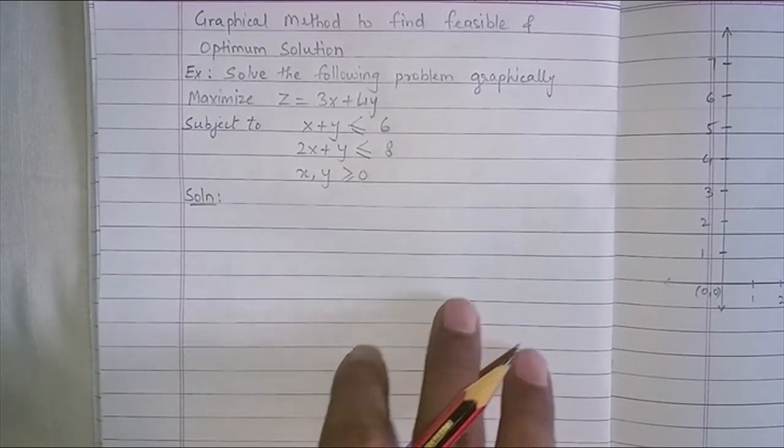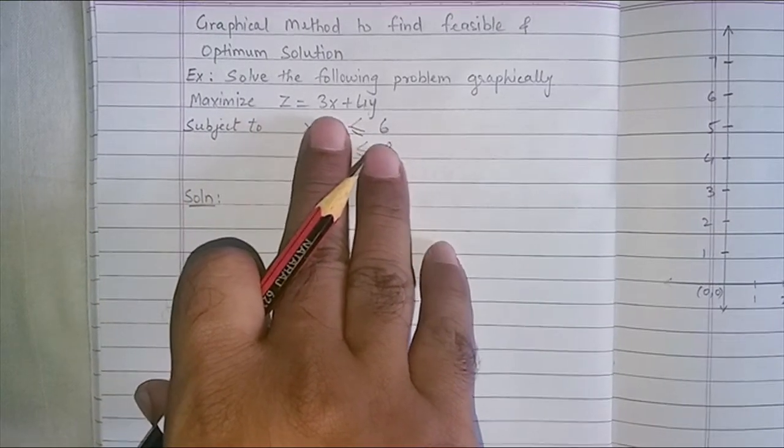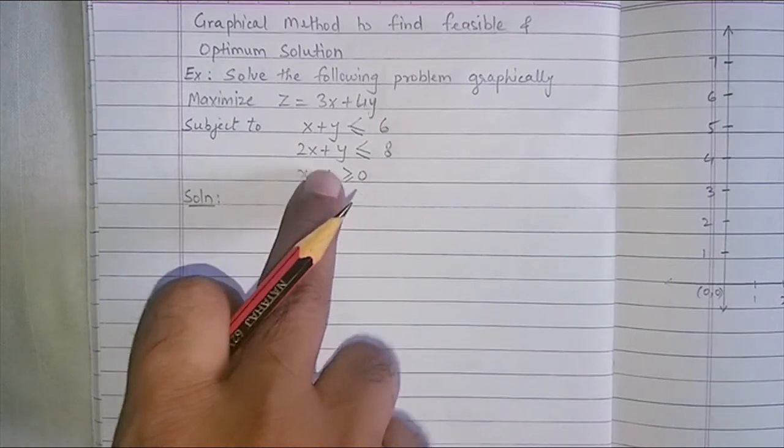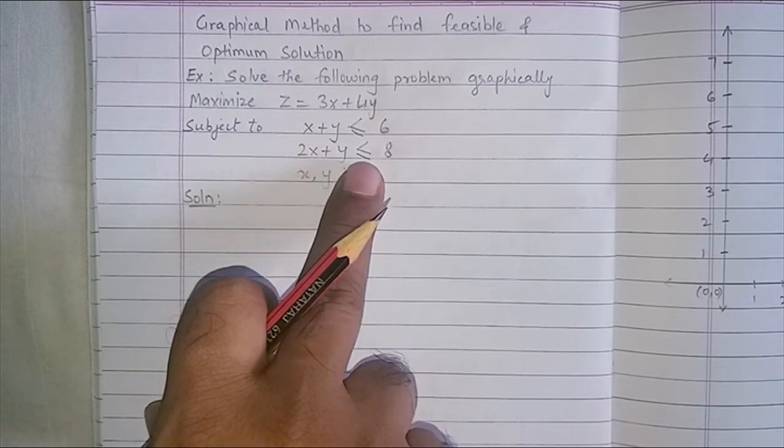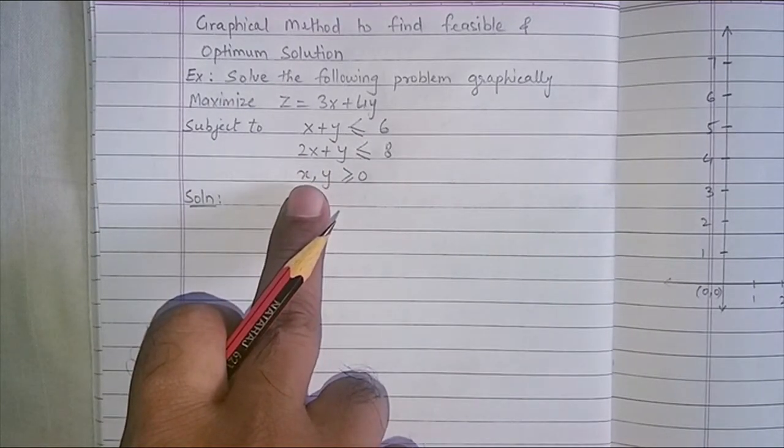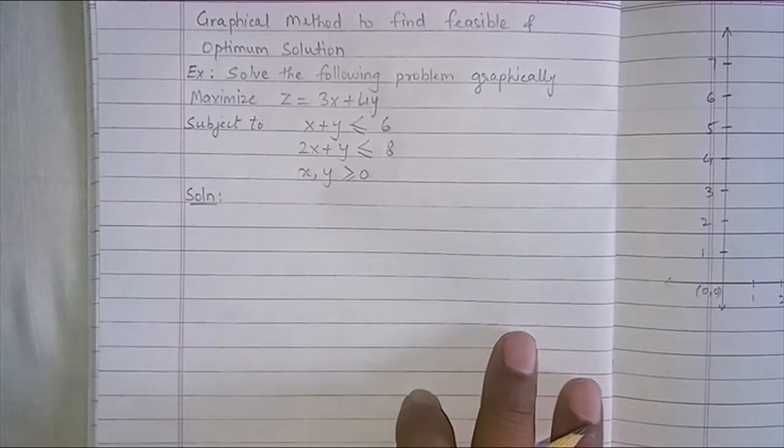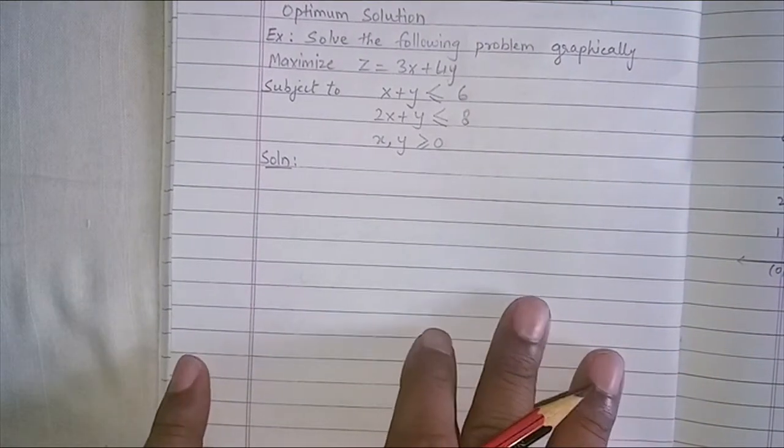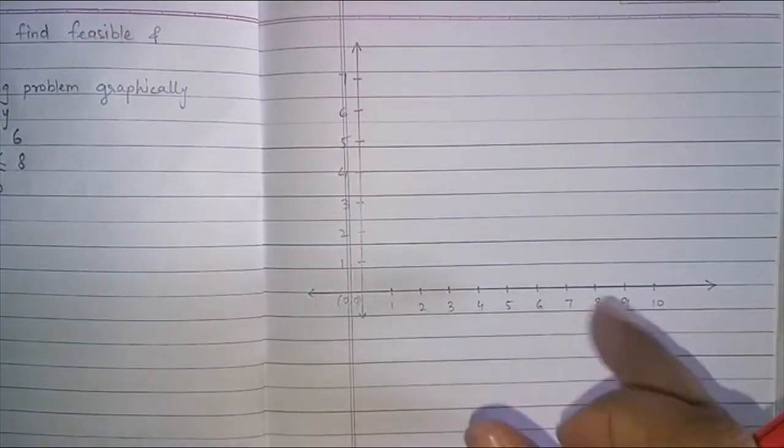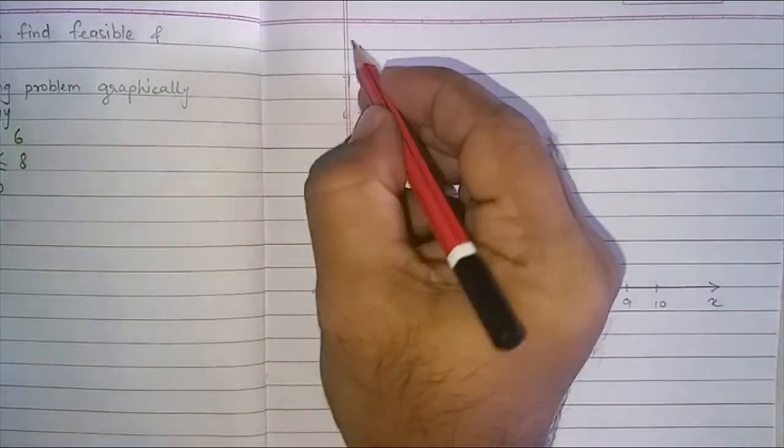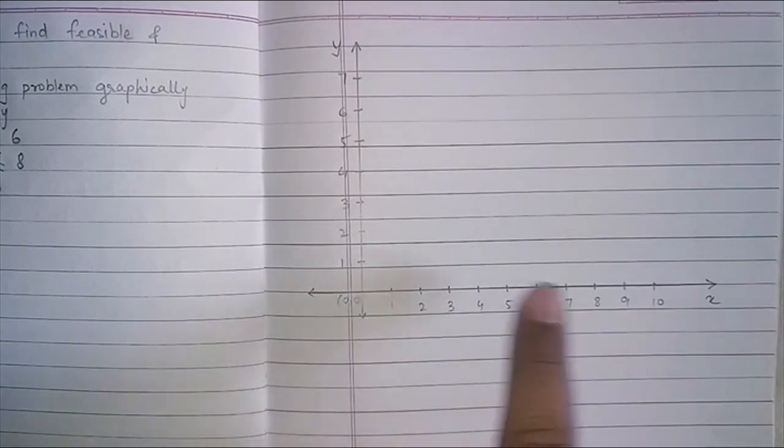For that, I have taken one LPP model which has a maximization objective function 3x plus 4y and there are two constraints given to us: x plus y less than equal to 6, 2x plus y less than equal to 8, and this is your non-negativity constraint x, y greater than equal to 0. To begin with, we are going to solve this problem by plotting a graph for which I have already drawn the x and the y axis. This is my x axis. This is your y axis. I have taken one unit as one centimeter here on both the axes.